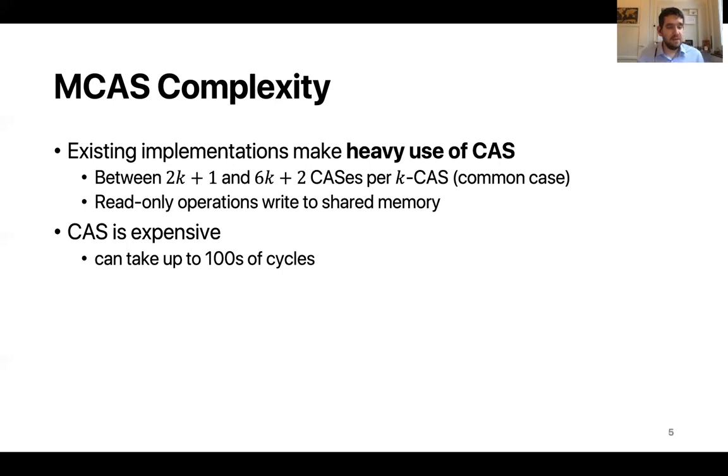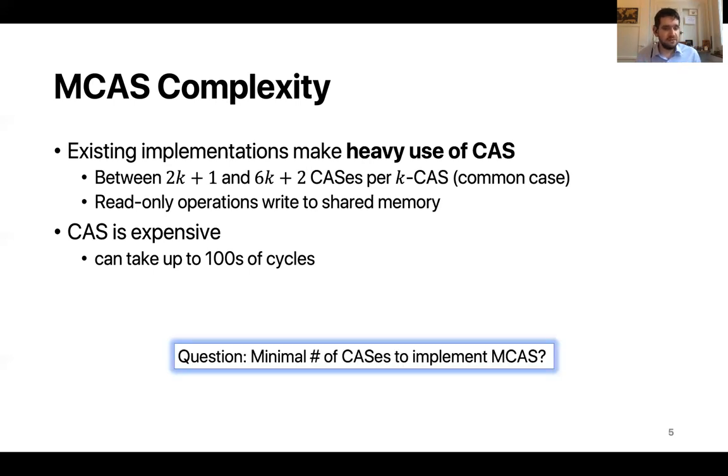This is an undesirable property because prior work has shown that writing during read-only operations limits scalability. Now CAS is an expensive instruction and it can take up to hundreds of cycles to execute which begs the natural question. What is the minimal number of CASs required to implement multi-word compare and swap? This is the question that we address in our paper and we do so through a series of contributions.